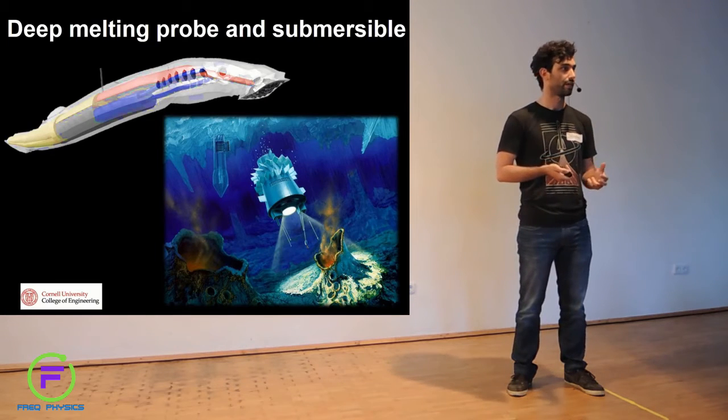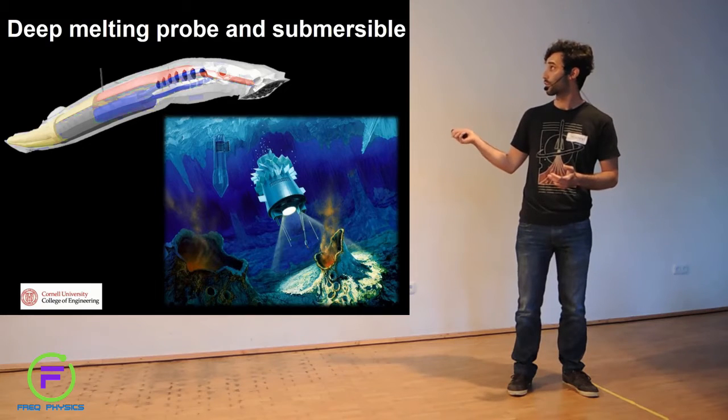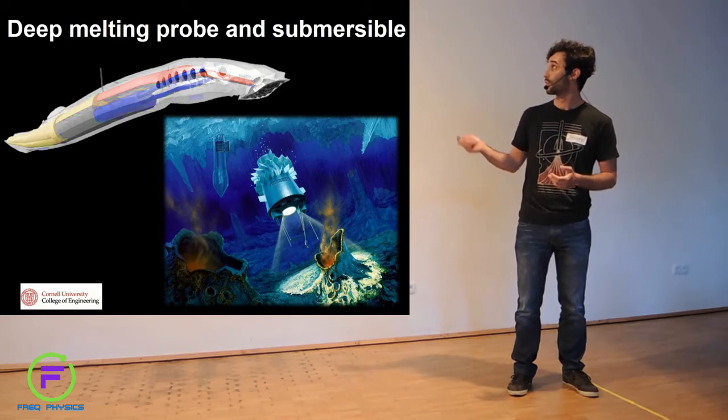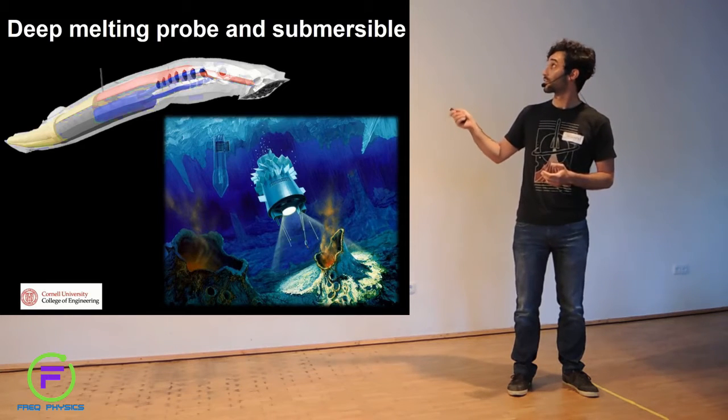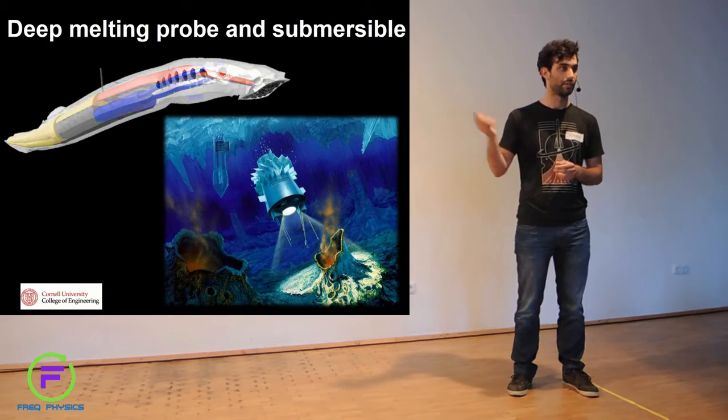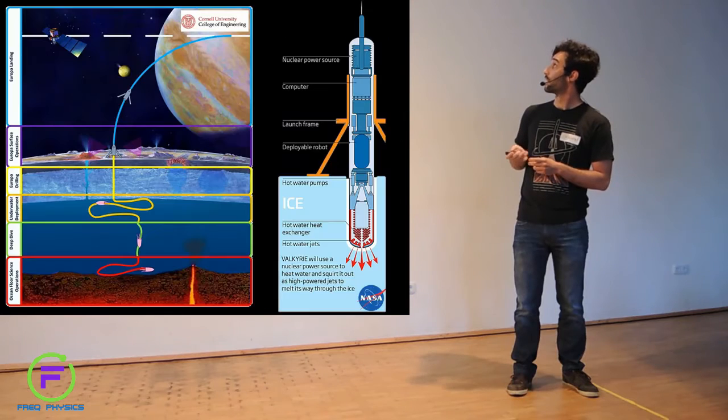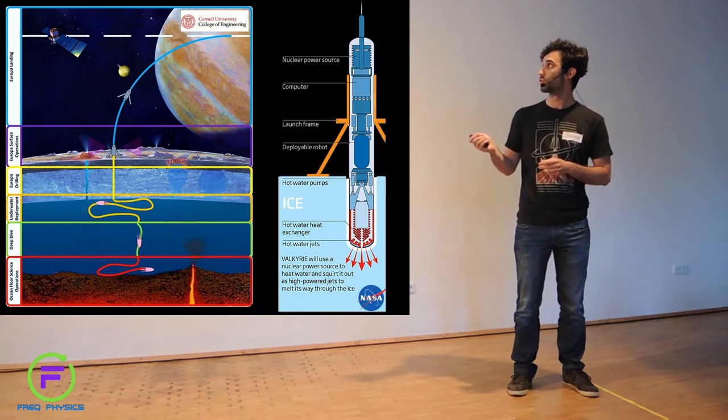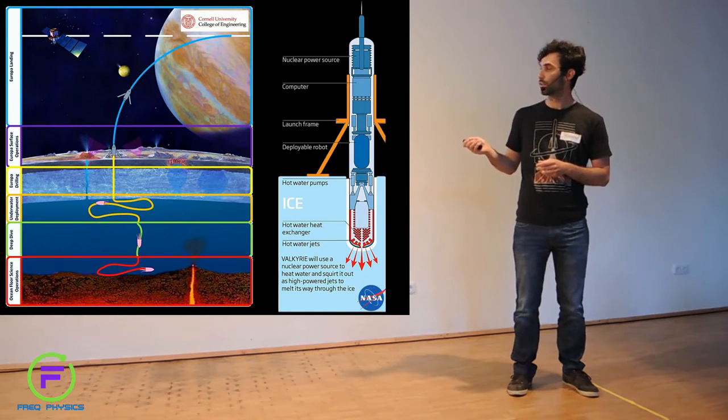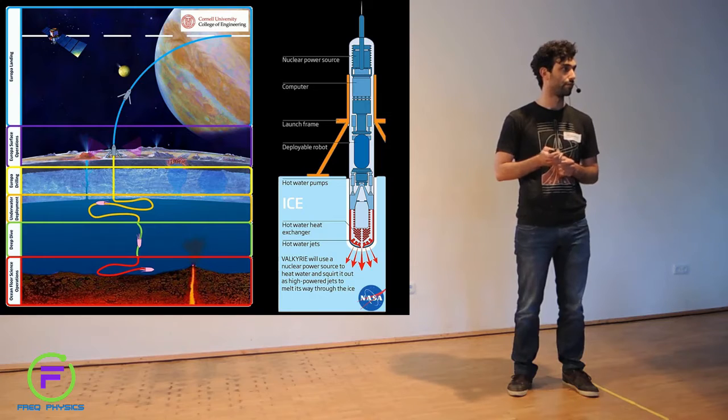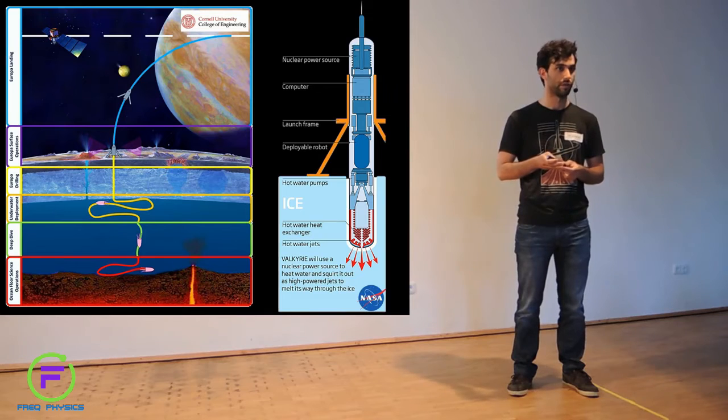The most sci-fi concept of all is this: a submarine that goes into the ocean and looks around for life. That is a fancy way of showing this. What I like about this is that they are actually building a submarine that really looks like a squid. I find this funny in a way. The idea is to land on the icy moon, drill through the ice with this probe right here, and then swim in the ocean, go to the bottom and look for life where it's more likely to be around hot sources on the bottom of the ocean.